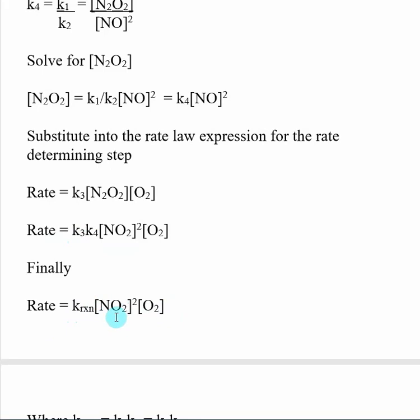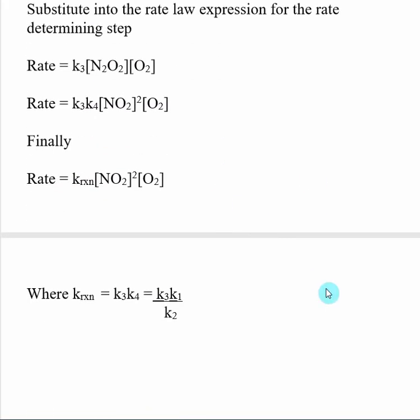This came from the substitution we needed to get rid of N2O2. We did that by doing some algebra with our first step and substituting in. Now we have a rate law expression that only uses our reactants.